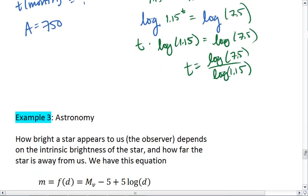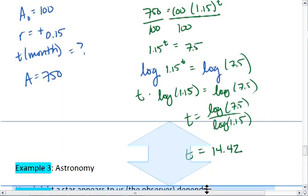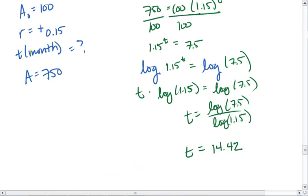Use your calculators and we should find that the log of 7.5 divided by the log of 1.15 is approximately equal to 14.42. Now I want to go back. I will see that t is in months. This is 14.42 months.